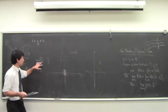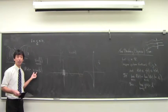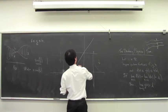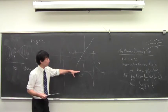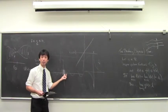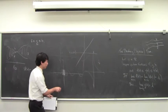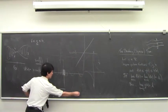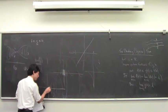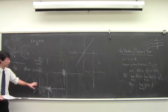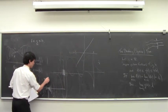Now suppose you multiply sine(1/x) by x. Out here you're multiplying by bigger and bigger numbers, and over here near zero you're multiplying by smaller and smaller numbers. So the graph is going to look like the wildness is still there, but you're trapped between the lines y=x and y=-x, which form an envelope. The graph gets squeezed in as x approaches 0.